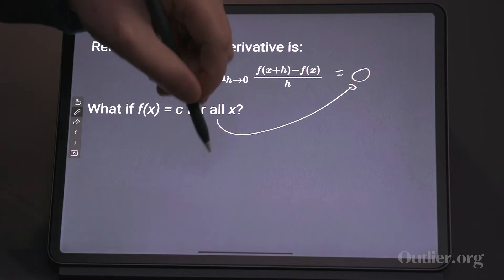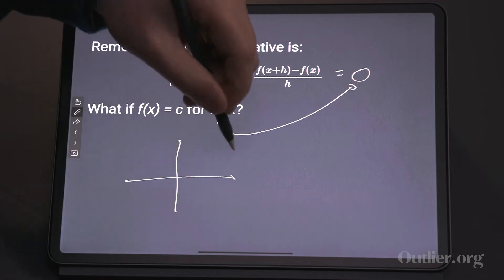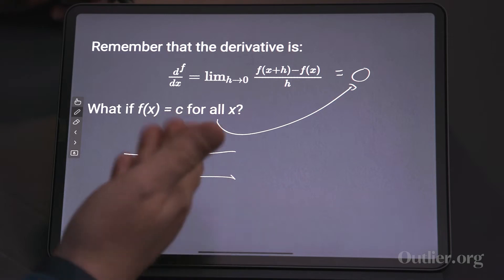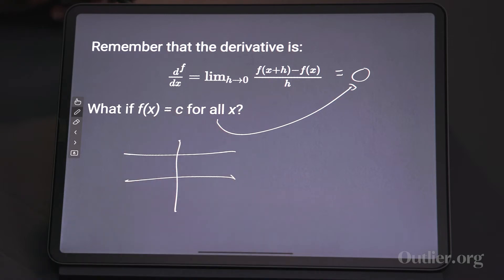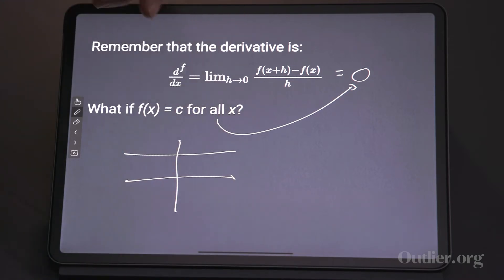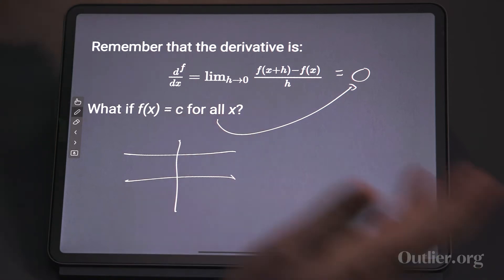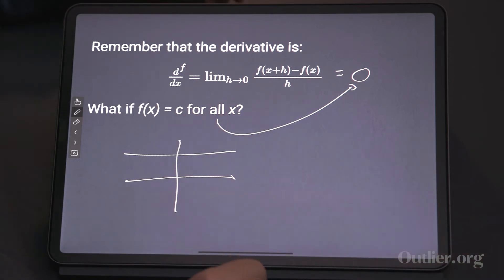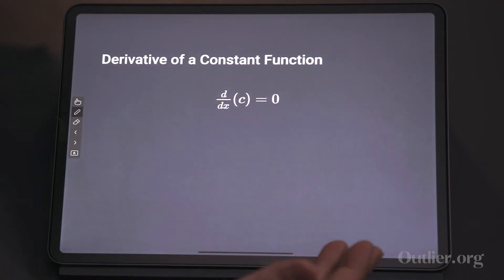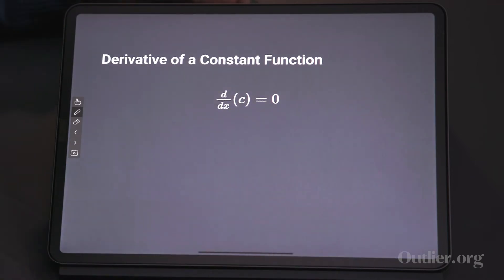That actually makes sense, because if you have a constant function, then it is simply a horizontal line. What's the slope of that line? Zero. As we've talked about, a line is its own tangent line. So that's what we have, and that is our first law of derivatives: the derivative of a constant function is zero.